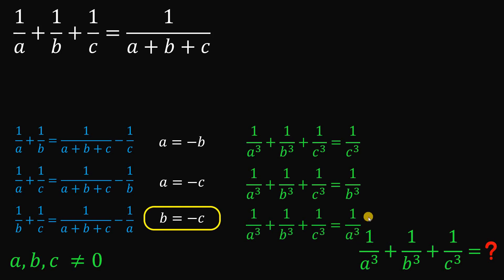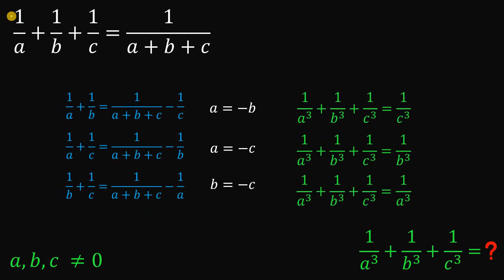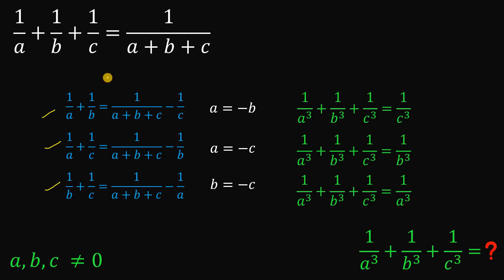Therefore, we have 3 possible cases. Given the equation 1 over A plus 1 over B plus 1 over C equals 1 over A plus B plus C, we found 3 possible answers: 1 over C cubed, 1 over B cubed, or 1 over A cubed. And that is our answer to this question.